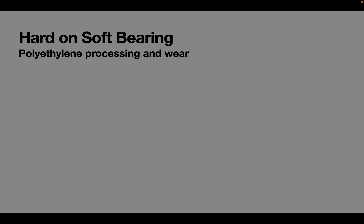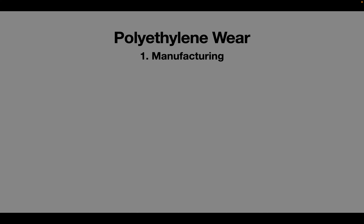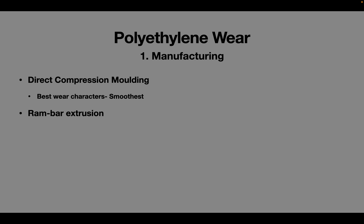Multiple steps involved in polyethylene processing affect its wear properties, which we can divide under the headings of manufacturing, sterilization, irradiation, and shelf life. Of all the manufacturing processes, polyethylene manufactured by direct compression molding gives the best wear characteristics. Ram bar extrusion is another method. An important point to note is that additives like calcium stearate, used as an anti-caking agent, reduce the consolidation and increase the oxidation of the polyethylene.